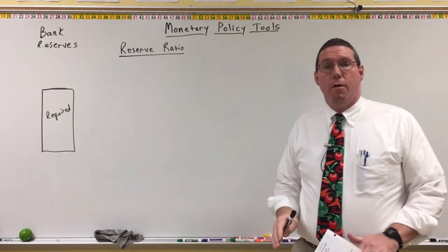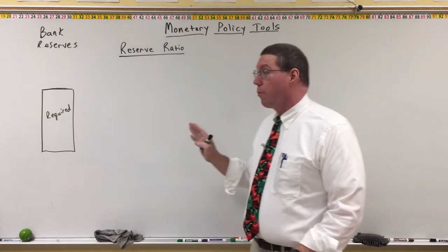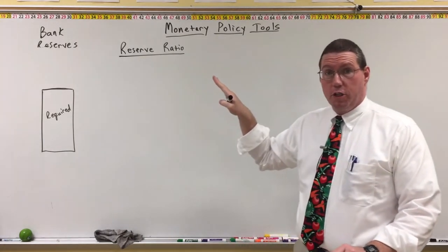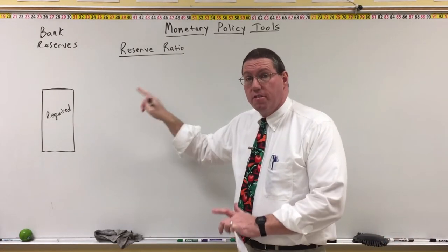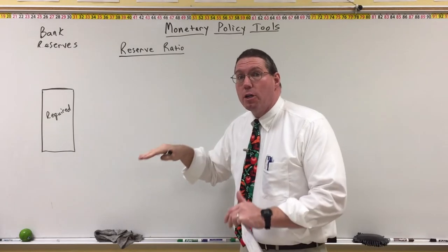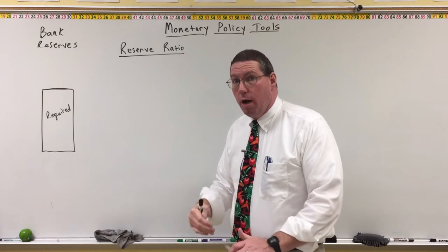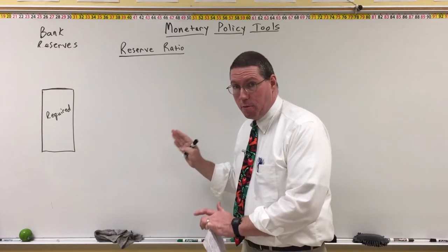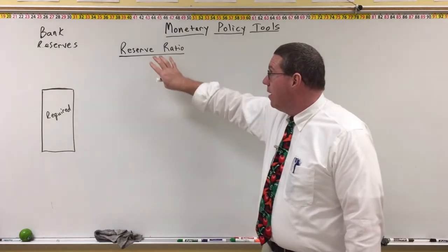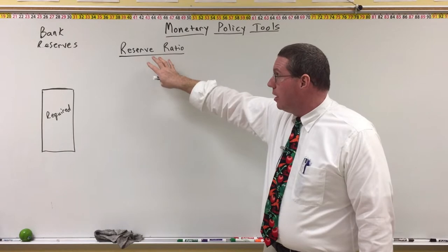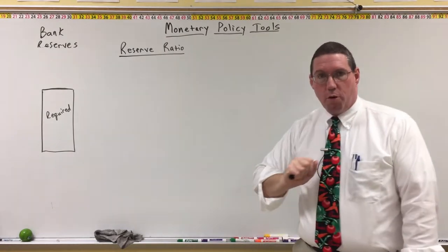The third monetary policy tool that the Fed uses is called the reserve ratio. You're already familiar with the reserve ratio — this is the percentage that the Fed sets to tell banks how much money they have to hold back and not lend out. It's a part of the fractional reserve banking system. The Fed can actually influence the money supply by changing the reserve ratio.